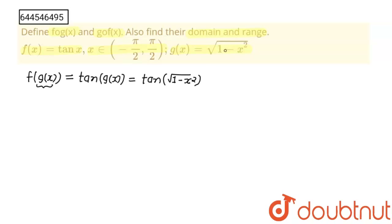But here you can see that g(x) is √(1 - x²), and √(1 - x²) lies between 0 and 1. So this value is between 0 and 1, which is well within (-π/2, π/2). Now we have to find x for this domain, so 1 - x² should be greater than or equal to 0.